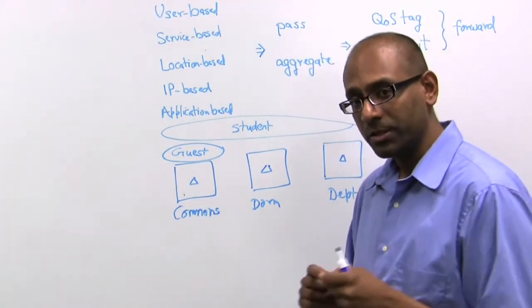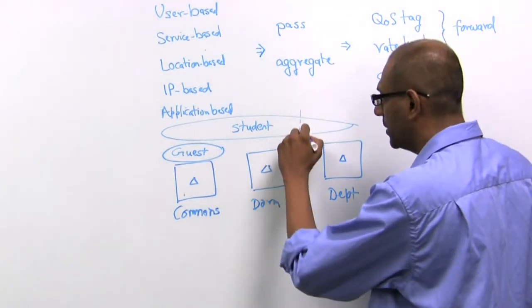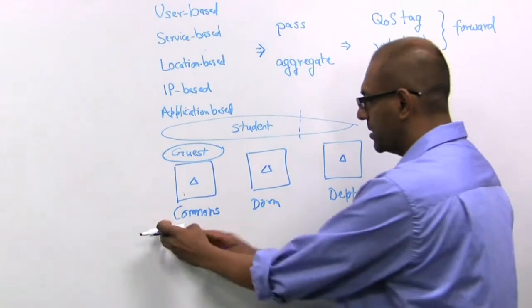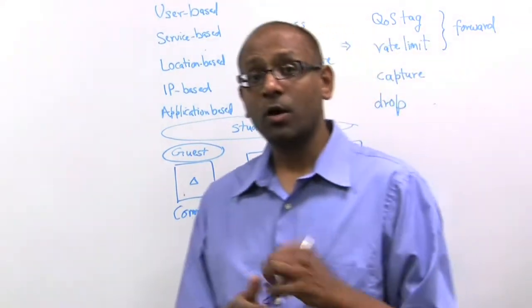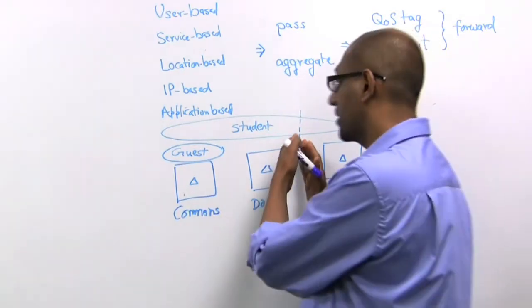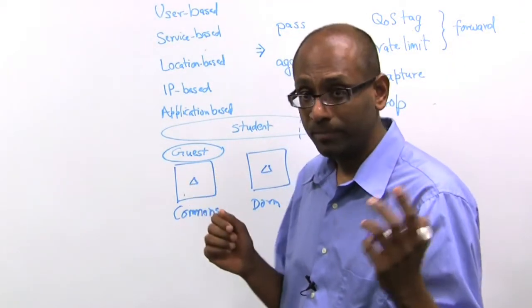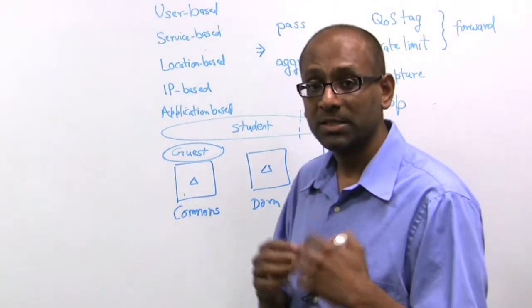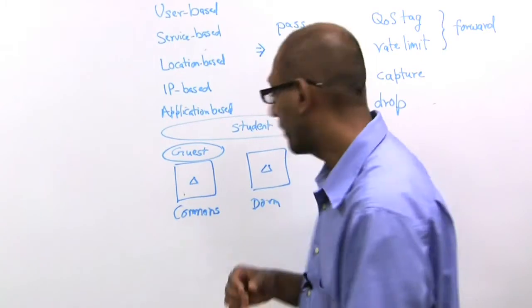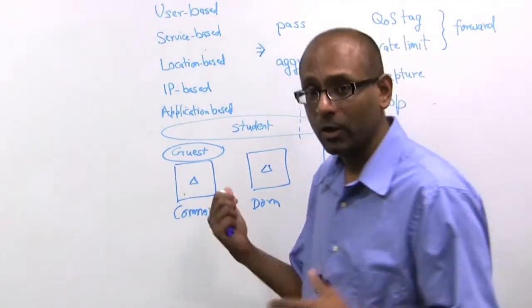Now we want a further restriction wherein the student gets different policies in the commons and dorm areas from the department. So for example, in the commons and dorm areas, maybe the student is allowed to access all kinds of applications with equal priority, while in the department, maybe access to certain sites or certain subnets are forbidden, and priority might be given to certain types of traffic characteristics.